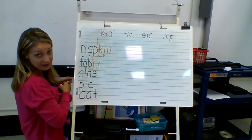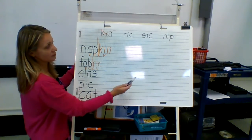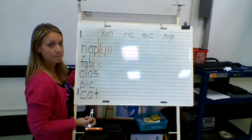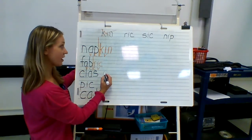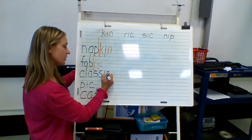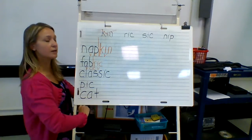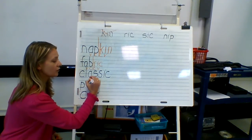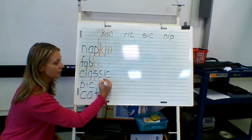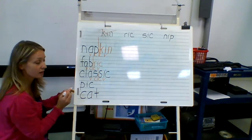Let's take a look at the next set. We have 'class.' What would we add to make a word — rick, sick, or nip? We would add 'sick,' so we have classic. When dividing classic into syllables, we find our vowel-consonant-consonant-vowel pattern again. Classic is divided into two syllables between the two S's.